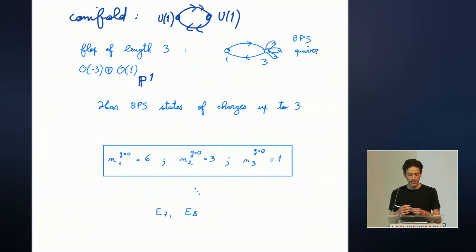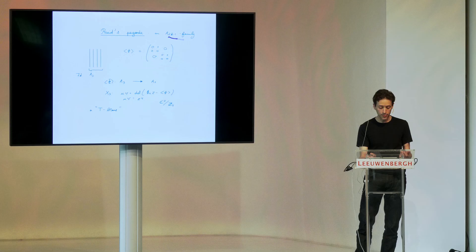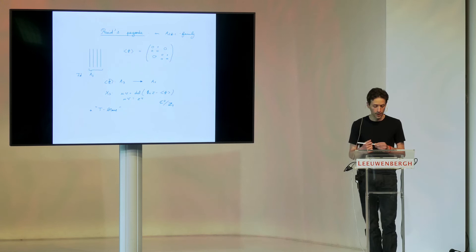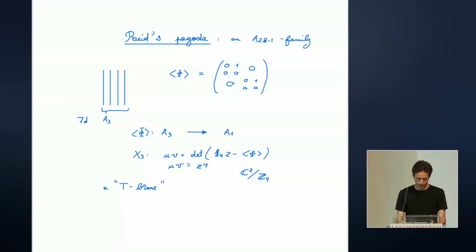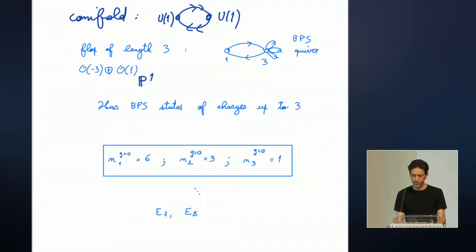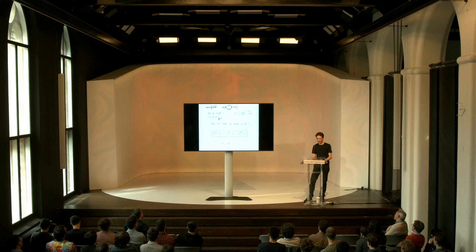All of these varieties are non-toric, so none of the usual techniques like the topological vertex work for this. But now we know how to deal with these things. I will now revert back to the original story about white dots.